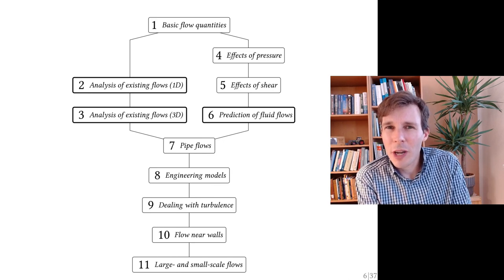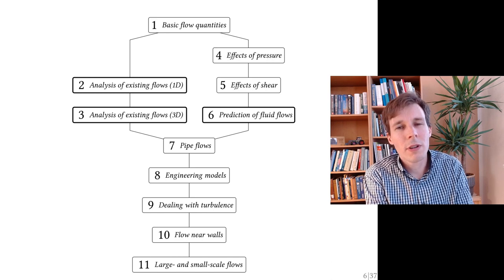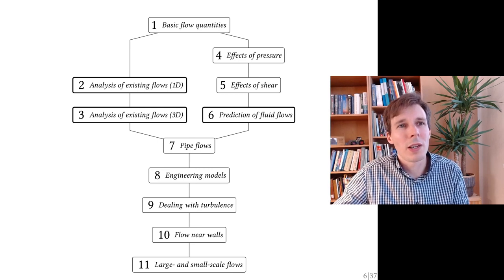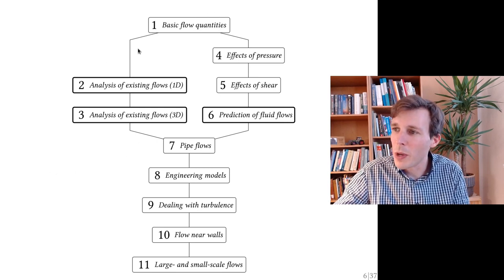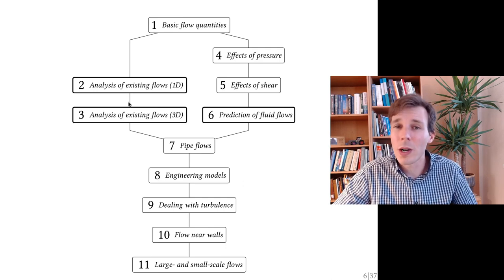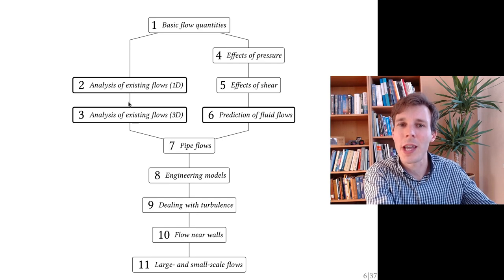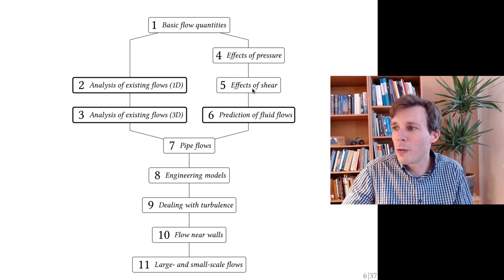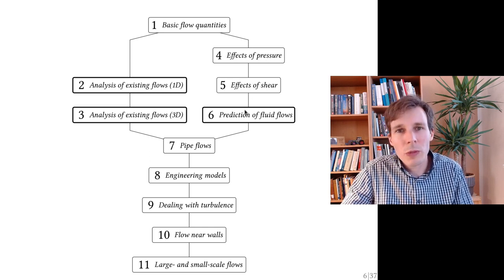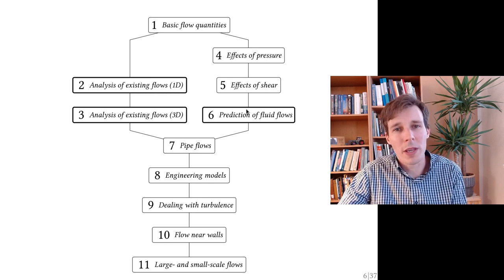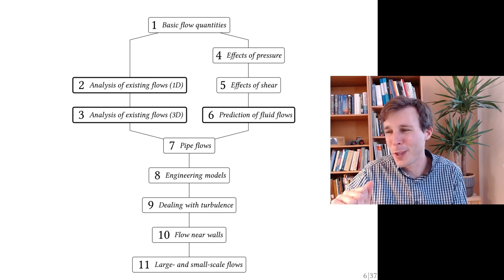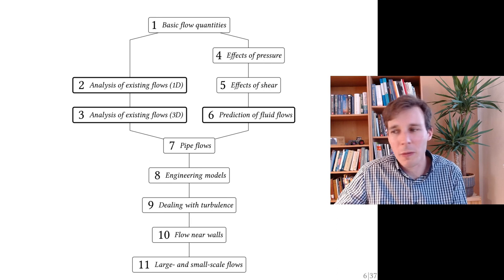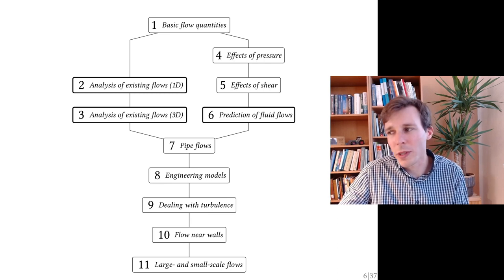The course content has 11 chapters and, as the diagram here shows, they're not all equally important. There are two branches basically: we start at the top with basic flow quantities and then go on to analysis of existing flows, where we know what the flow is and we try to calculate things from it. Then we branch out to chapters 4, 5, and 6, where we try to predict what the flow will be — a much harder endeavor. Once through this, we go through a few interesting chapters on specific topics from 7 to 11.